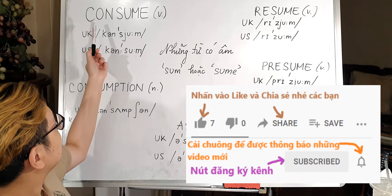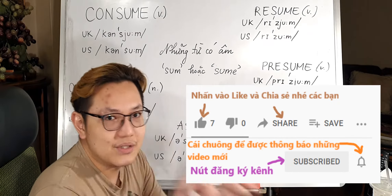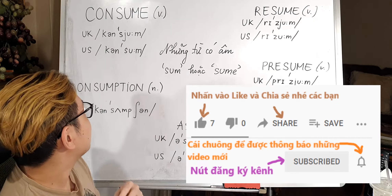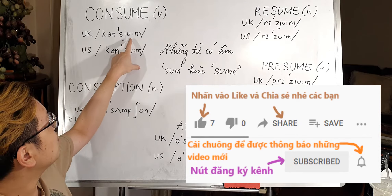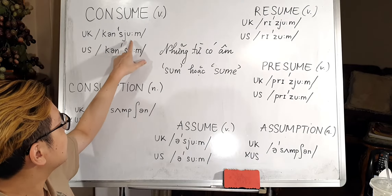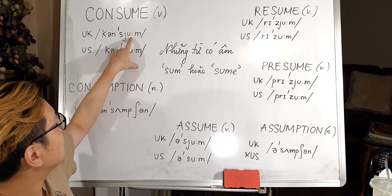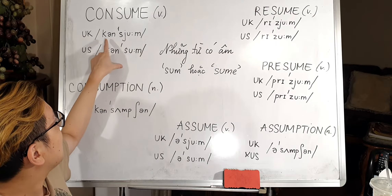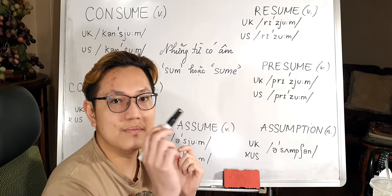Let's start first with the word 'consume'. So 'consume' means to eat in large quantity. You can see the UK pronunciation is 'consume' — second syllable, with a J and a long U vowel. Consume. Consume.